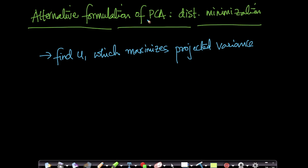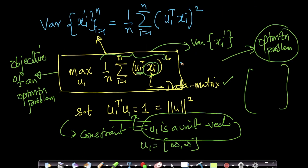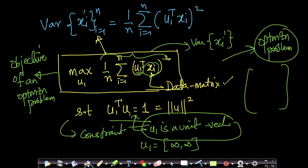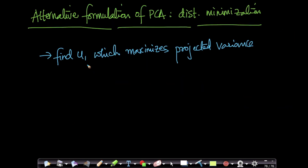There is an alternative formulation called the distance minimization formulation. In the projected variance formulation, we saw that this is the optimization problem we are solving, with a certain objective function and constraint. There is an alternative formulation which I will explain.